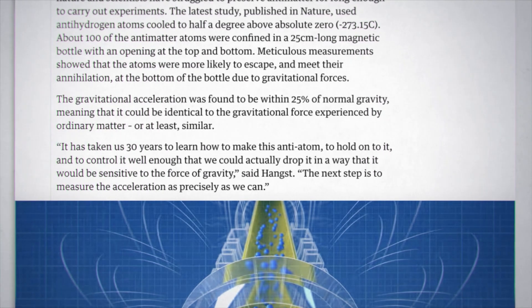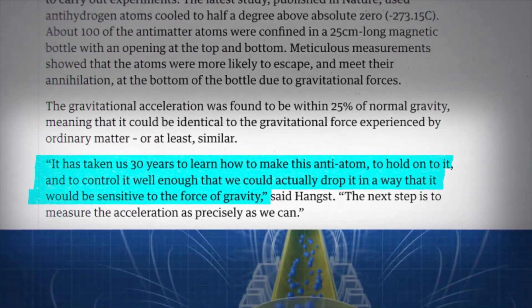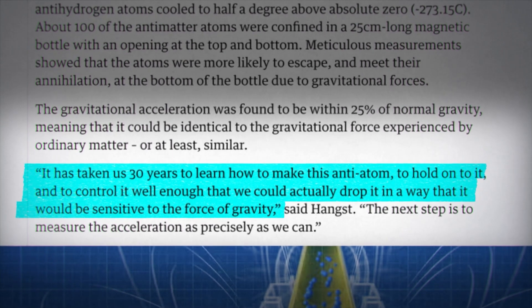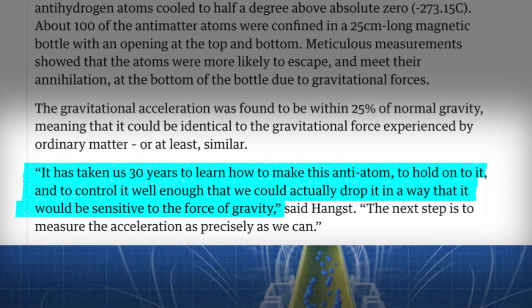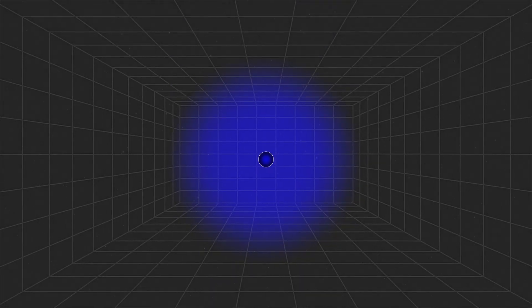In the words of one of the researchers, it has taken us 30 years to learn how to make an anti-atom hold onto it and to control it well enough that we could drop it in a way that it would be sensitive to the force of gravity. And it turns out this isn't where the anti-symmetry is hiding. So our attention turns back to the electron.